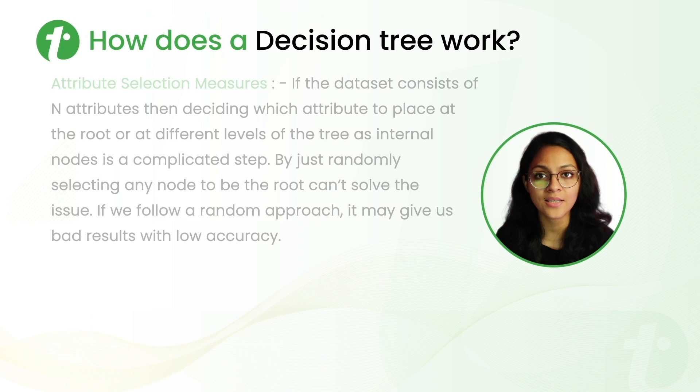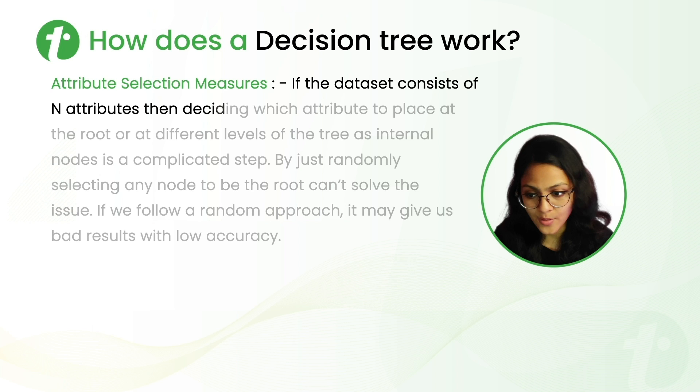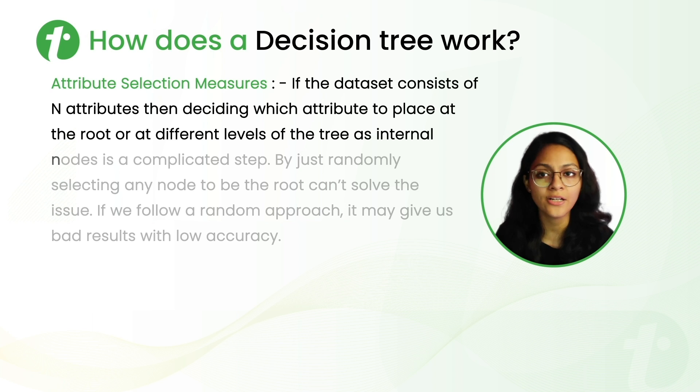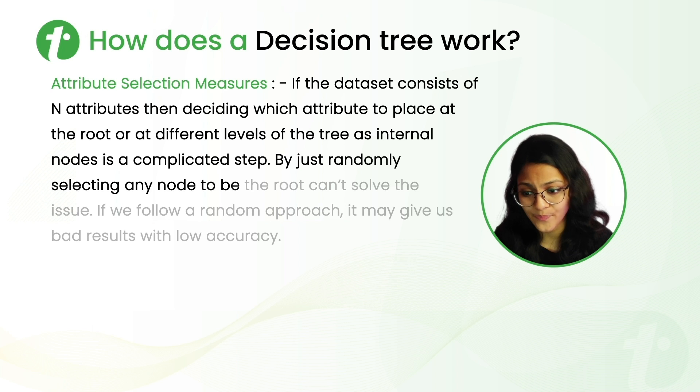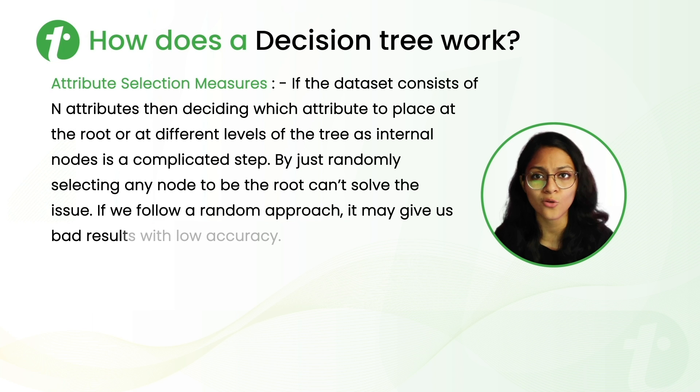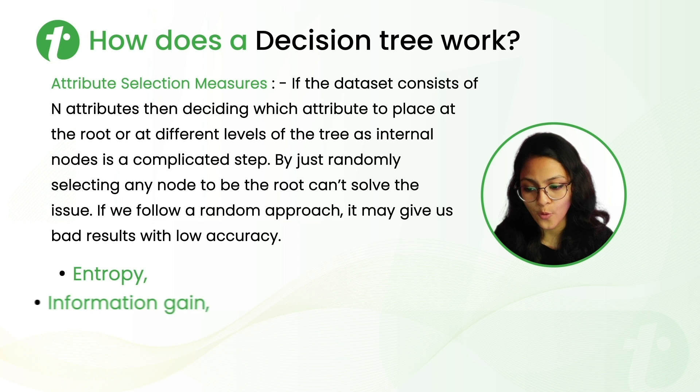There is one more term which is important, that is attribute selection measure. If the dataset consists of N attributes, then deciding which attribute to place at the root or at any different level as the internal node is a complicated step. So, just by randomly selecting any node to be the root, can't solve any problem. So, for that we have different methods and some of them are entropy, information gain and gini index. So, let's discuss these three in detail.